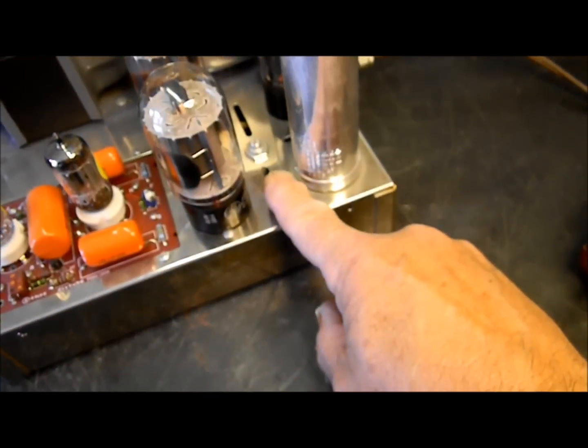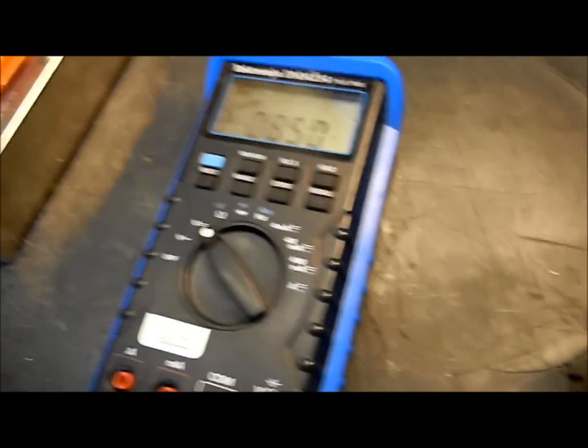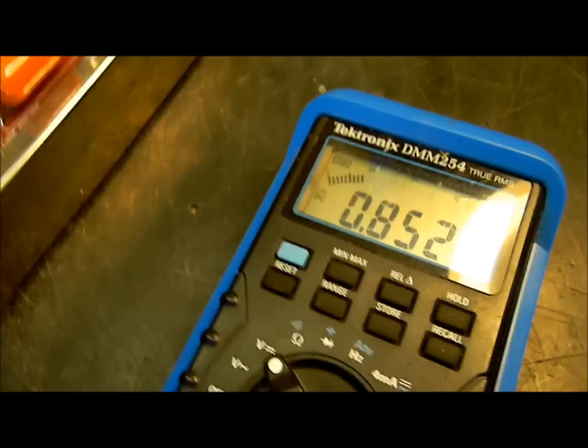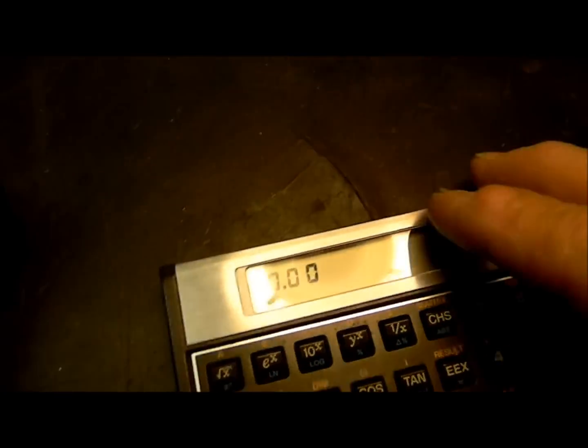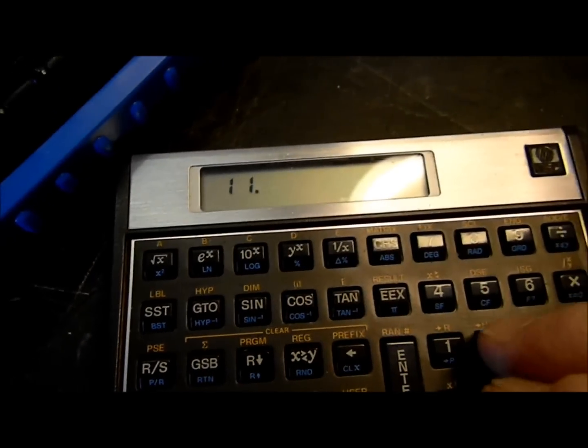Okay, now we have the 6L6s in there. I have not touched any bias adjustments on the amplifier. Now we have 0.85 volts. If we do the math here, the current, E over R, 0.85 divided by 11.2 equals 0.08, 80 milliamps. That's just right. That works great.